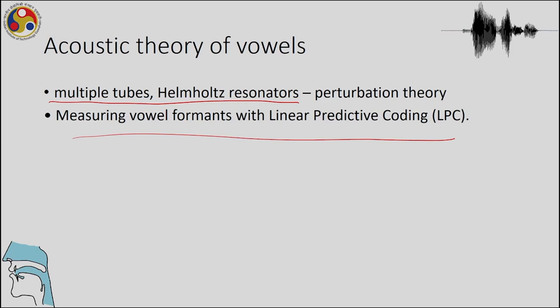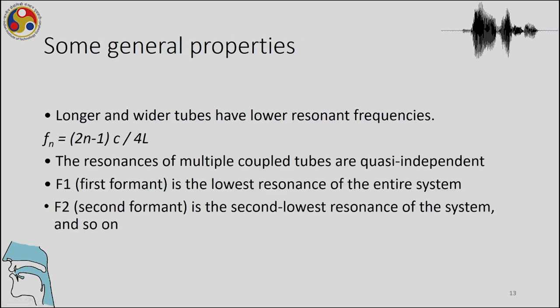The tube models we will discuss predict the kinds of formants found in different vowels. Longer and wider tubes have lower resonant frequencies, which is why integer multiples 1, 2, and 3 are used for the different formants. The resonances of multiple coupled tubes are quasi-independent, and F1 is the lowest resonance of the entire system, F2 the second lowest, and so on.